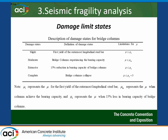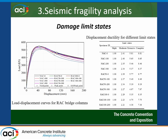The damage limit states were defined in terms of ductility demand, with four different damage states considered. The parameter μ_y represents the displacement ductility at yield, and μ_m represents ductility at maximum lateral capacity. An additional limit state corresponds to when column capacity reduces by 15% from the maximum. These limit states were developed based on pushover analysis for all specimens, identifying the yield point, peak point, and 0.85 times the maximum capacity.